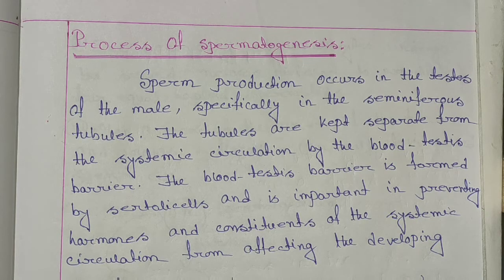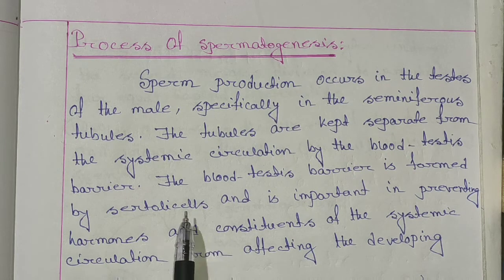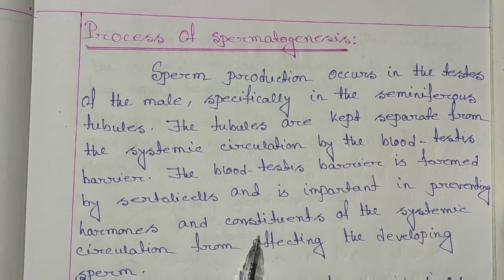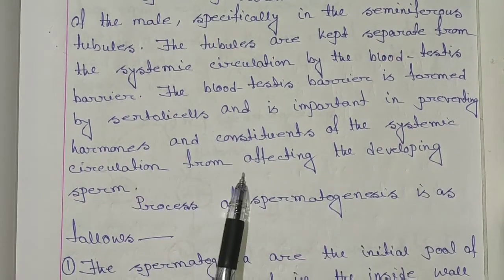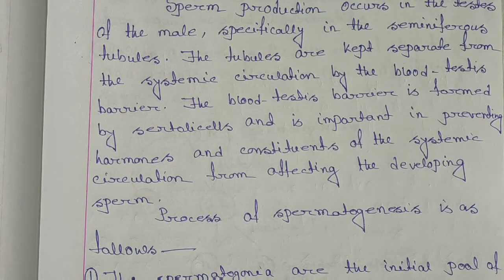The tubules are kept separate from the systemic circulation by the blood-testis barrier. The blood-testis barrier is formed by Sertoli cells and is important in preventing hormones and constituents of the systemic circulation from affecting the developing sperm. Ye jo blood-testis barrier hota hai, woh Sertoli cells se produce hota hai aur sperm develop hone mein ek bahut hi gurutvapurna role play karta hai.